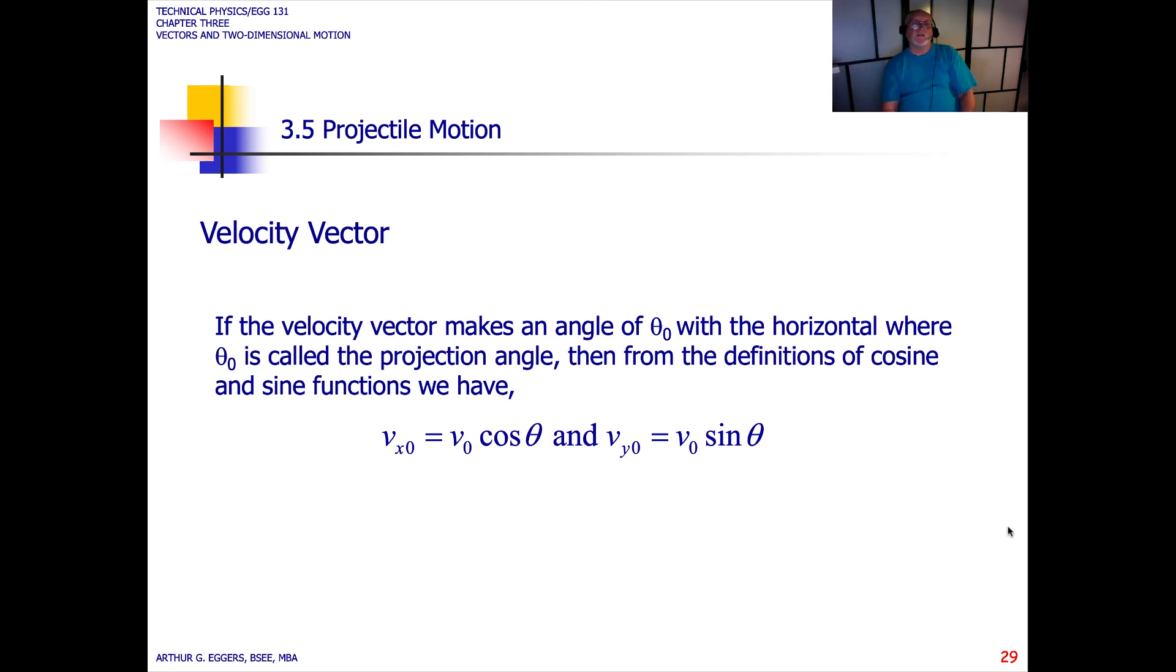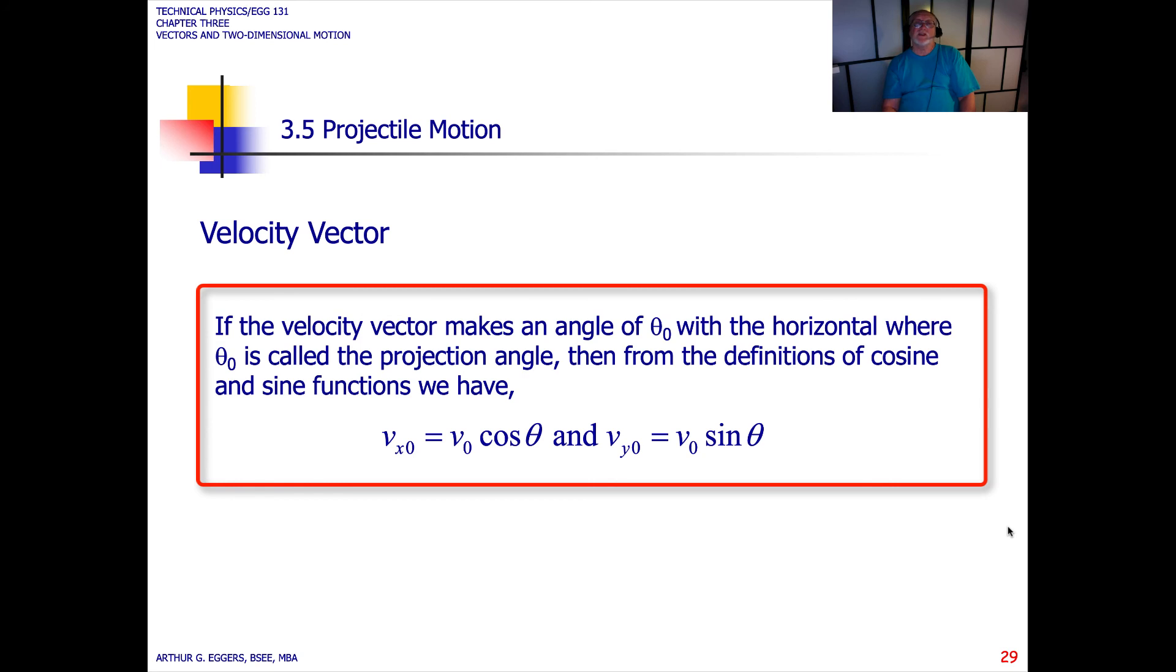Another term: velocity vector. If the velocity vector makes an angle of theta zero with the horizontal, where theta zero is called the projection angle, then from the definitions of sine and cosine we have, and you can see, we go right back to our terms here that we saw in our example. The velocity initial in the x direction is equal to velocity initial cosine theta, and the same thing for the y component. Vy initial equal to v naught sine theta.